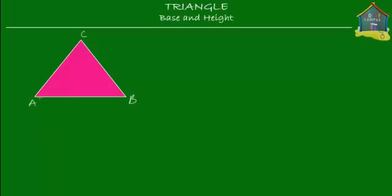So, as simple as that, the base of the triangle is the side that's at the bottom. Here, it's side AB that's at the bottom, and therefore side AB is the base of the triangle. I'm going to write that down: the base is equal to side AB. So we're done with that — the base has been taken care of. But what is the height?